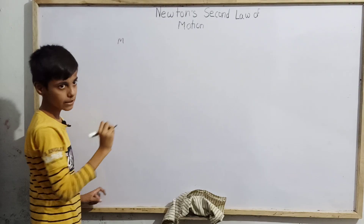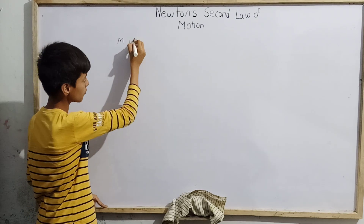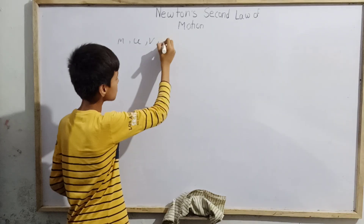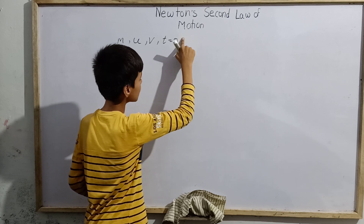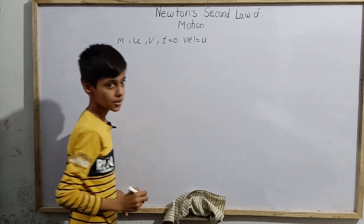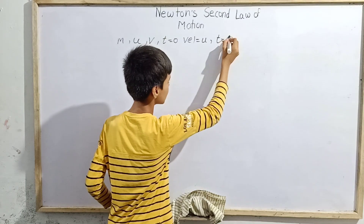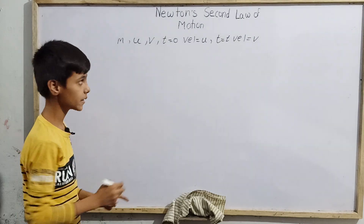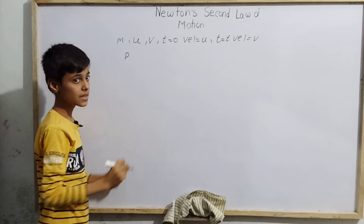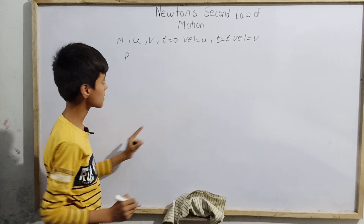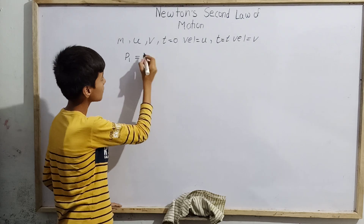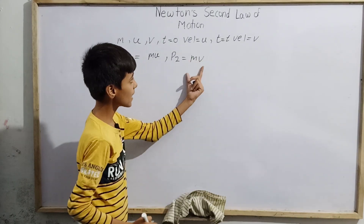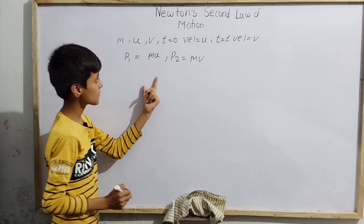Let M be the mass of any object. Let U be the initial velocity of the object at T equals zero, and V be the final velocity at time T. Since momentum is the product of mass and velocity, there will be two momenta: initial momentum P1 equals M times U, and final momentum P2 equals M times V.